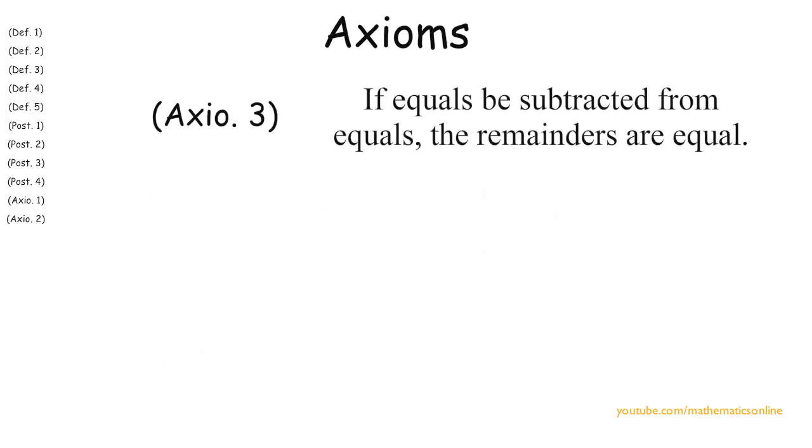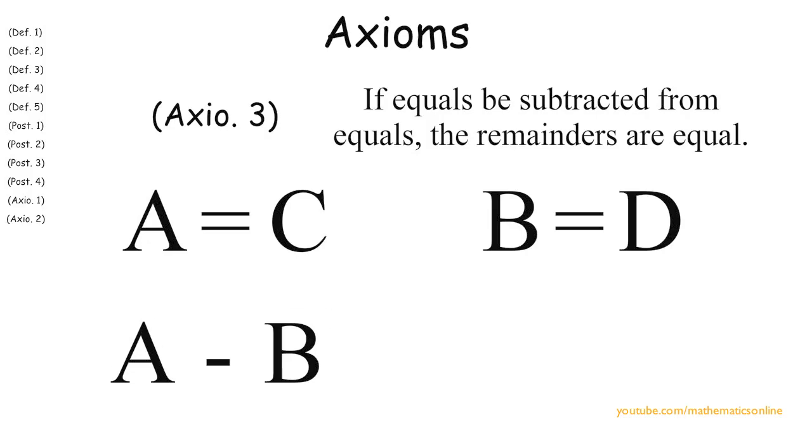Axiom three, if equals be subtracted from equals, the remainders are equal. So A is equal to C, B is equal to D, A minus B is equal to C minus D.